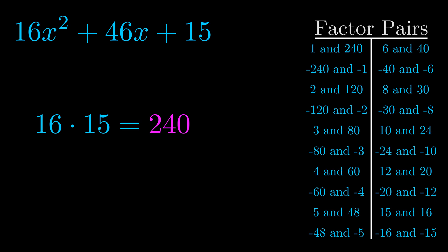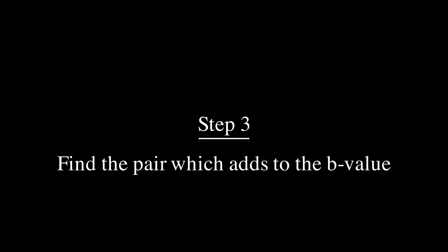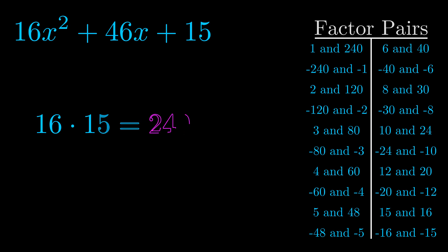Now once you have these factor pairs, the goal is to find which of these pairs adds to the b value. The b value is the coefficient on the x term. That's the middle term, the one that we haven't done anything with yet. And really this is the only factor pair that we need.